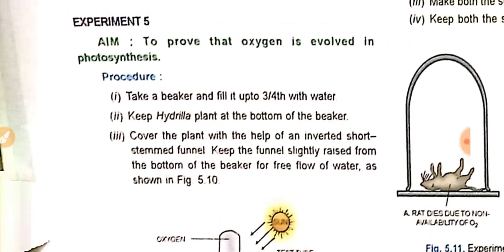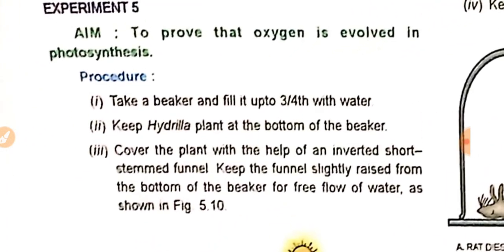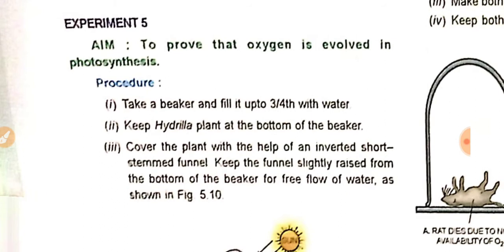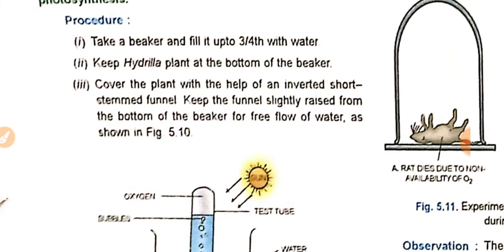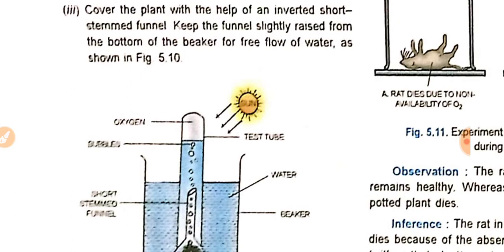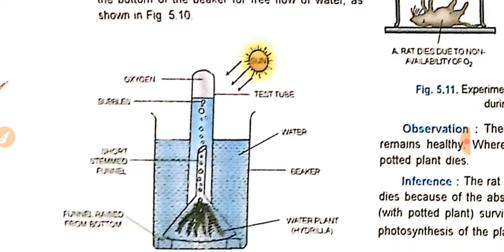Today we read about an important experiment to prove that oxygen is evolved in photosynthesis. First, take a beaker and fill it up to three-fourths with water. Keep a hydrilla plant at the bottom of the beaker. Then cover the plant with the help of an inverted short-stemmed funnel. Keep the funnel slightly raised from the bottom of the beaker for free flow of water, as shown in Figure 5.10.